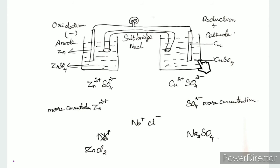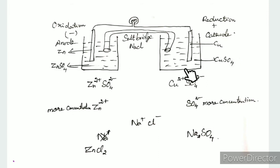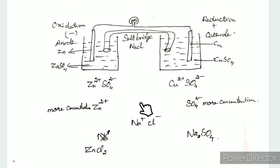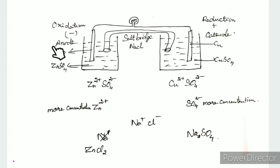This is a galvanic cell example using a zinc anode and copper cathode. Copper sulfate solution is used as the electrolyte. The two half-cells are connected, and a bulb is connected in the circuit. The salt bridge uses sodium chloride solution. Oxidation occurs at the anode and reduction at the cathode.